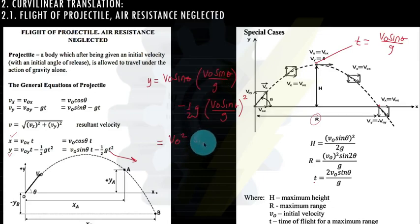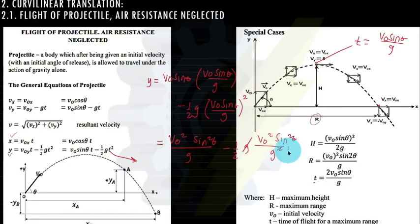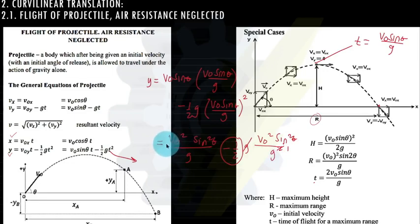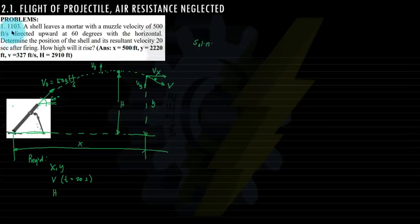Simplifying the first term gives v sub o squared sine squared theta over g. The second term gives one-half times v sub o squared sine squared theta over g. Combining: one minus one-half equals one-half, so the maximum height formula becomes h equals v sub o squared sine squared theta over 2g. Let us now proceed to examples, from the book of Ferdinand Singer, Problem 3, Chapter 11.